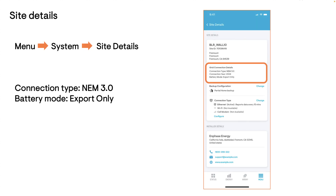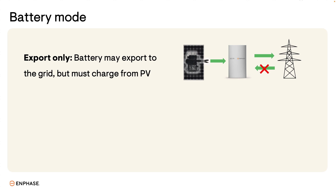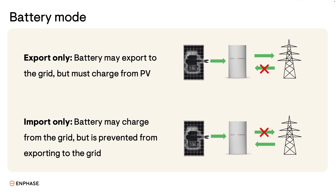It's important to note that there are a couple of settings for your Enphase energy system which determine whether your system can export to the grid. In the Enphase app, tap menu, then system, then site details. Under grid connection type it should say NEM 3.0, and next to battery mode it shows you whether your battery was registered as export only or import only by your installer. Export only means that your battery can export to the grid but can only be charged with solar power. Import only means that the battery may be charged by the grid but is prevented from exporting to the grid. The AI optimization profile will maximize savings whether your battery mode is export only or import only. The battery mode can't be changed on the fly because the utilities require notification as transformer restrictions may apply. There will likely be an application fee to change the battery mode and you may need to get support from your installer with the paperwork.